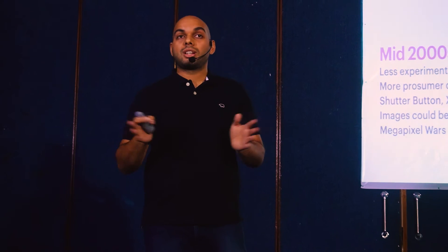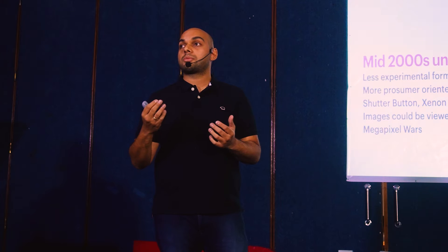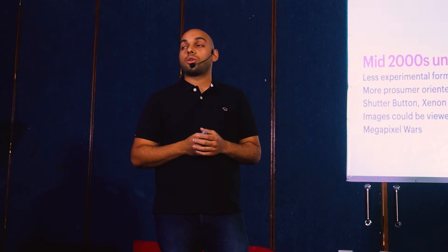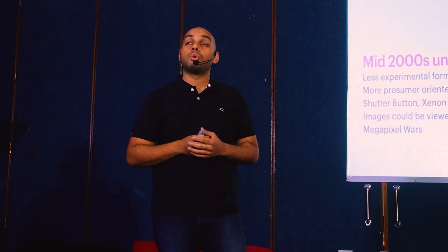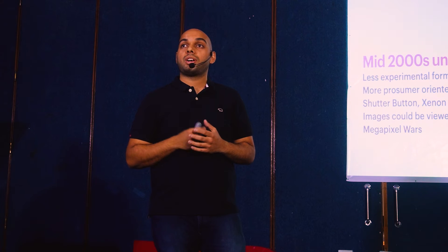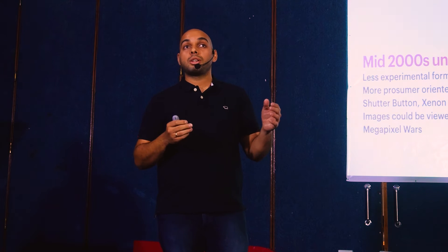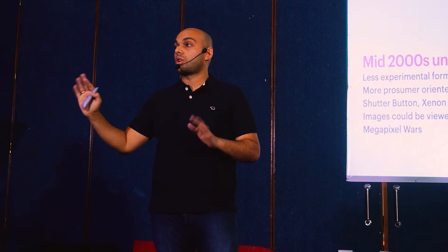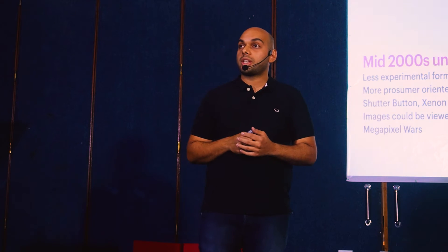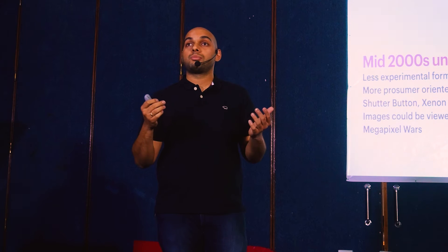From the mid-2000s until 2010, experimentation became a bit less. People started understanding that it's easiest to just have a camera at the back, which also gave more space and allowed higher megapixel counts and larger sensor sizes. This was the period of megapixel wars. Starting from less than a megapixel — VGA, QVGA, 1, 2, 3, 5, 8 — and finally we sort of stopped at 12. This era was important because it's also when I started my photography journey with a smartphone camera.